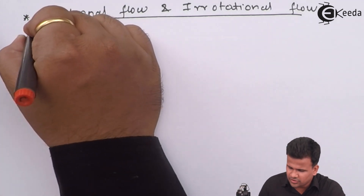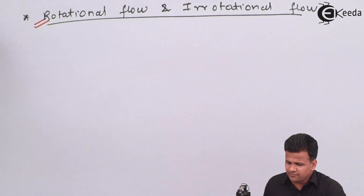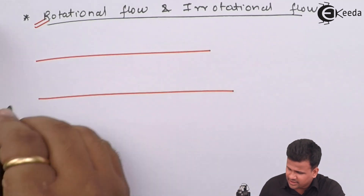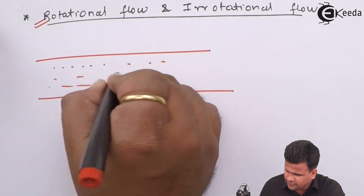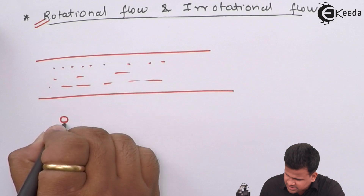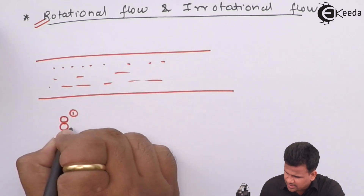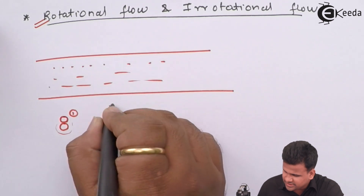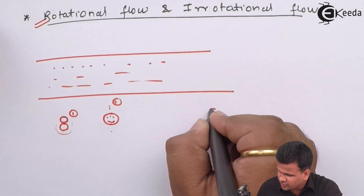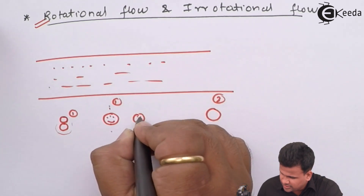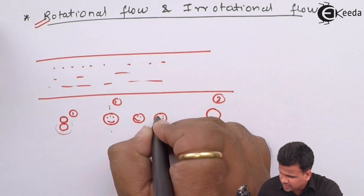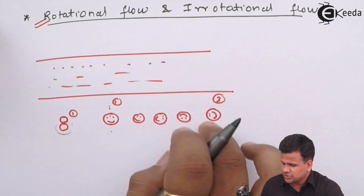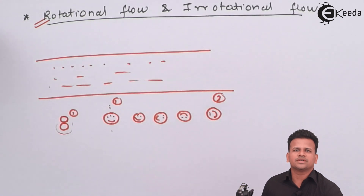What is rotational flow? Rotational flow is a flow in which, if a fluid is flowing and there are n number of molecules, one molecule rolls over another. While flowing from position one to position two, this molecule will actually rotate along its own axis. Due to this rotation along its own axis, the flow is called rotational flow.